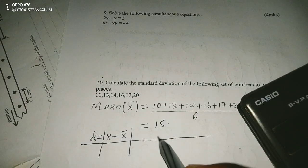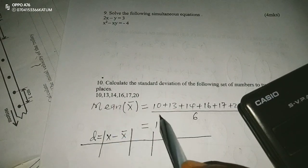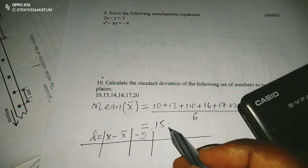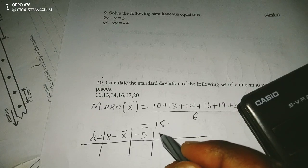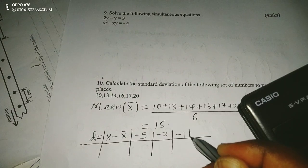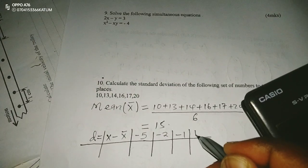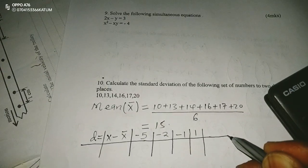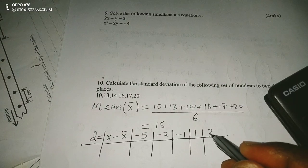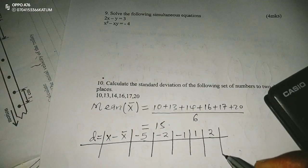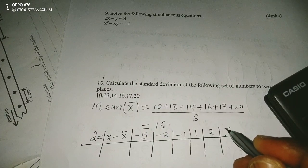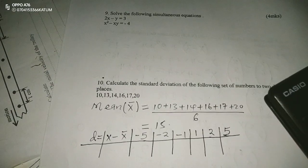The first one will be 10 minus 15, giving me negative 5. Then the next one is going to be 13 minus 15, negative 2. 14 minus 15, negative 1. 16 minus 15, 1. 17 minus 15, 2, and 20 minus 15, I'm getting 5.